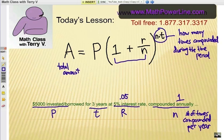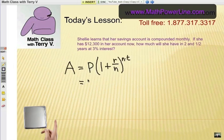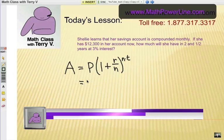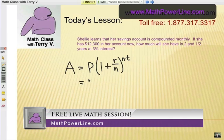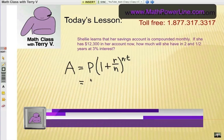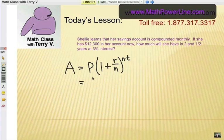Here's another example. Shelly learns that her savings account is compounded monthly. If she has $12,300 in her account right now, how much will she have in two and a half years at a 3% interest rate?